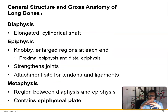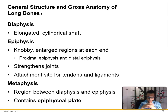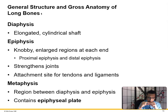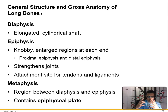Gross anatomy of long bones: the elongated shaft is the diaphysis. The epiphysis is the knobby, large region at each end — proximal and distal — strengthening joints and serving as attachment sites for tendons and ligaments. The metaphysis is the region between the diaphysis and epiphysis, and that is where the growth plate is. Most long bones stop growing around age 16–18 — 16 for females, 18 for males — but the spine continues to grow until the epiphyseal plate closes at age 25.